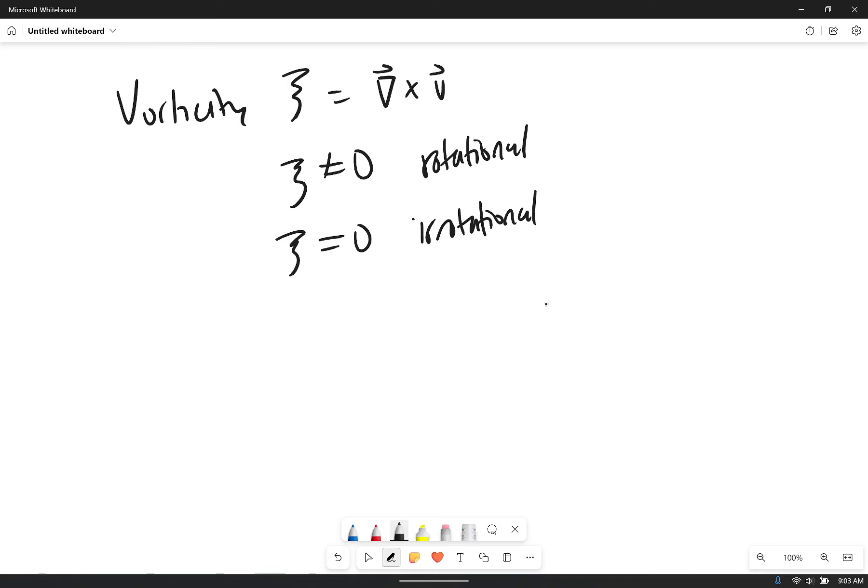So one case rotational, other case irrotational. Why do we care about that? Well, we developed something called the velocity potential, and that works right here. So velocity potential is good if we have an irrotational flow. So we want that sometimes.